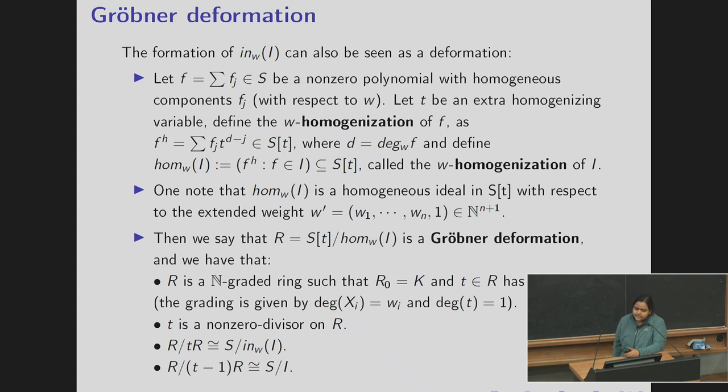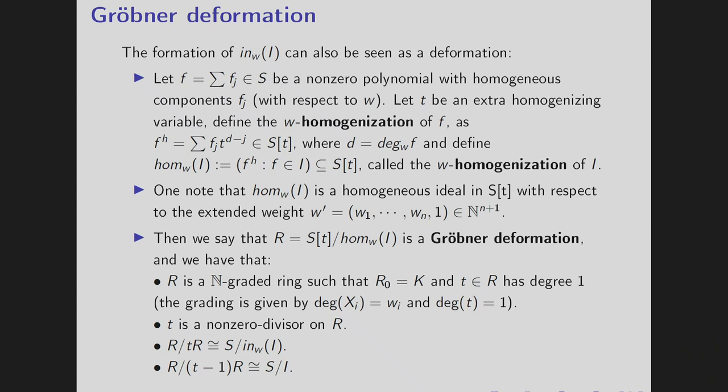Then R is called S[t] mod hom_w(I) is called a Gröbner deformation where R is a standard graded ring, t is given the order 1 and all the degrees of xi's are wi's. The t is a non-zero divisor and then R mod tR is S mod initial ideal, means it's the special fiber, and R mod (t-1)R is the same as S mod I, this is the general fiber.